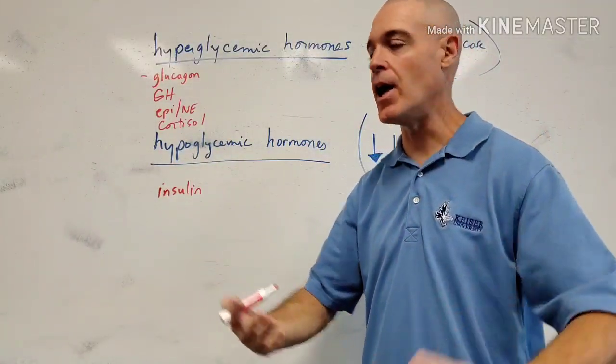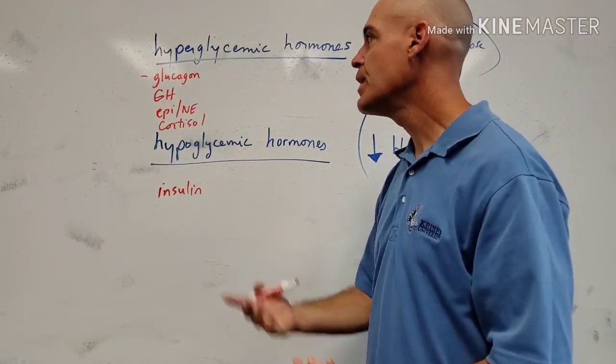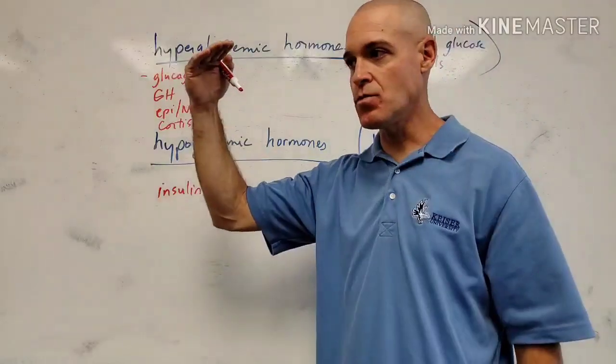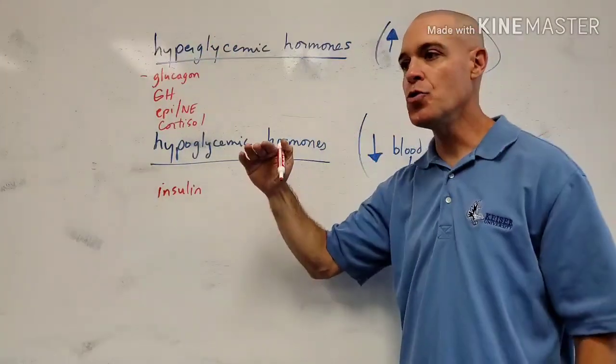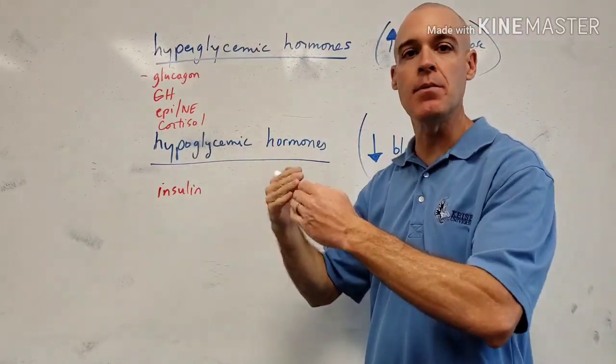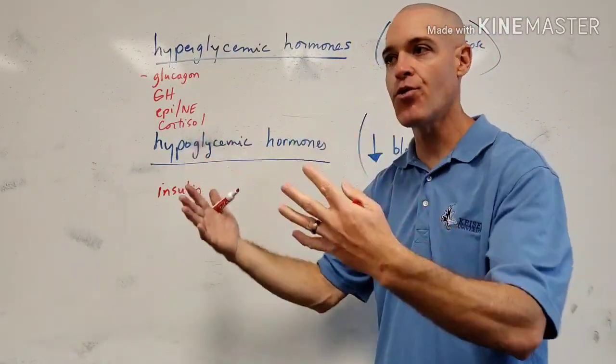It comes from that alpha cell and it is that really specific hormone that is going to raise your blood sugar levels when you're in between meals.